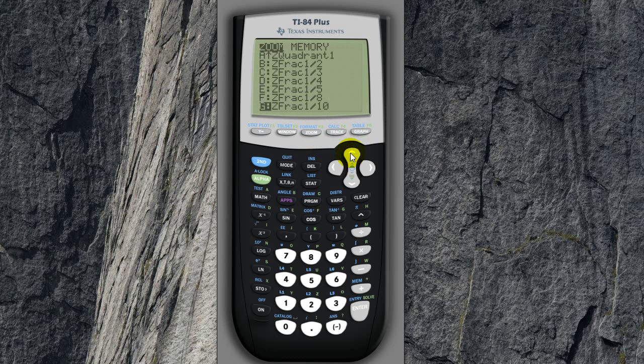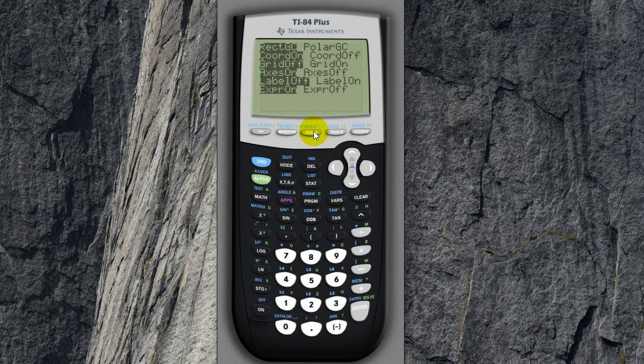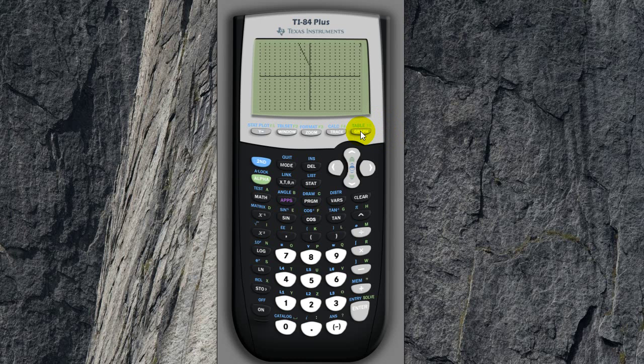So yeah, that's about it, there are a lot of different things you can play with, so try it out. I guess another thing you can try is changing the format of the graph, so second zoom, and then, for example, you can turn on the grid, so press grid, turn it on, and try the graph again, and you can see we now have grids. So yeah, that's pretty cool, okay.